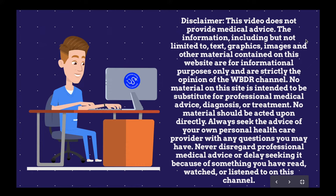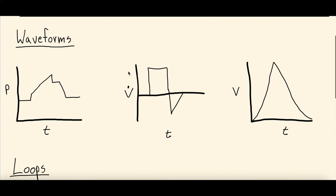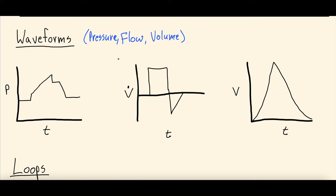With no further ado, stay well, keep learning, and let's get to the video. Alright, thanks for sticking around. Starting with waveforms — there are three basic waveforms that the ventilator gives us: the pressure-time waveform (pressure is denoted as P), the flow-time waveform (flow is this V with the dot over it), and the volume-time waveform. These are the three main waveforms — pressure, flow, and volume.